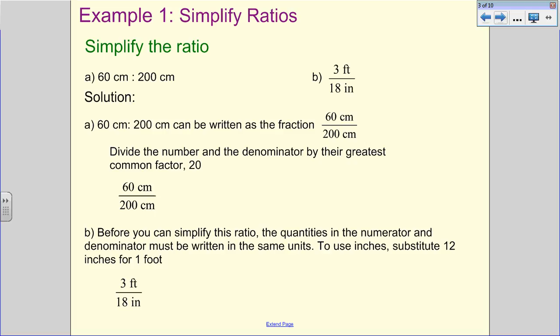We're then going to divide the number in the numerator and the denominator by their greatest common factor of 20. 60 centimeters over 200 centimeters. If we divide 60 divided by 20 and 200 divided by 20, that's going to equal 3 over 10. And then we want to label those. So this is 3 centimeters over 10 centimeters.